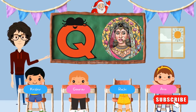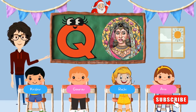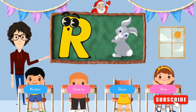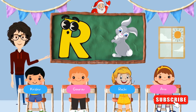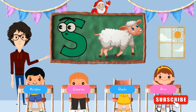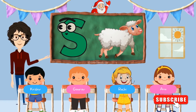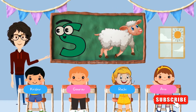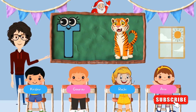Q for Queen. R for Rabbit. S for Sheep. T for Tiger.